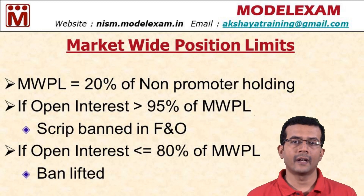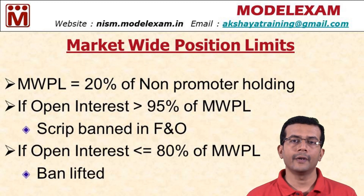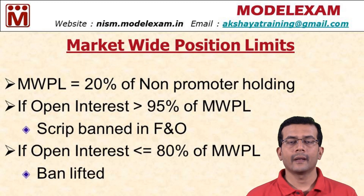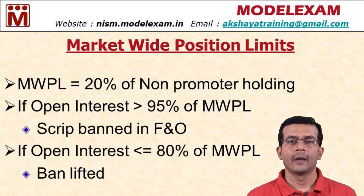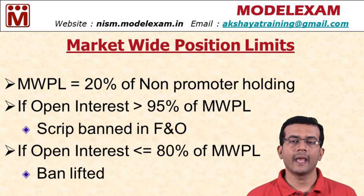Banned in the sense that trading will not be stopped. New buyers cannot come in — that means traders cannot take new positions in the market. For example, if a company called ABC gets banned in F&O because its open interest has crossed 95% of the market-wide position limit, a trader cannot come into the market and take a new position in ABC futures — whether it is a long position or a short position.